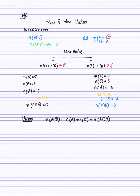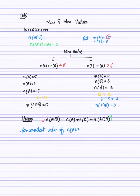Now we discuss union. To find the maximum and minimum values of A∪B: for the lowest value of union, the intersection must be highest — and the highest value of intersection is the smaller of N(A) and N(B). For the smallest value of N(A∪B), N(A∩B) should be largest. For the largest value of A∪B, the value of A∩B should be smallest, using the two cases we discussed.